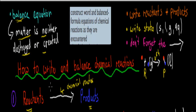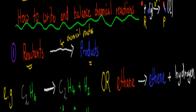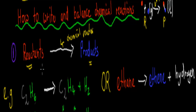Now I'll go through one example that you will encounter in your HSC chemistry course. There are three different types of equations and all three say the same thing — they describe ethane turning into ethene and hydrogen gas. One is a word equation, one is a formula equation, and the other is a structural equation. I'll go through the word equation first.